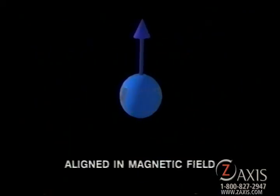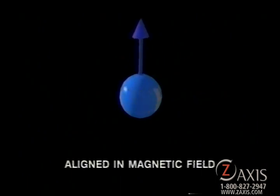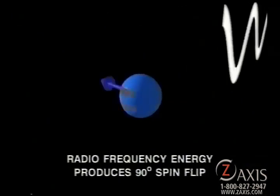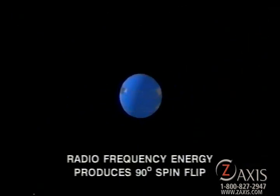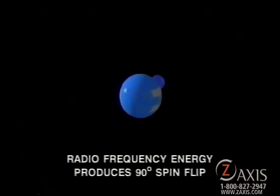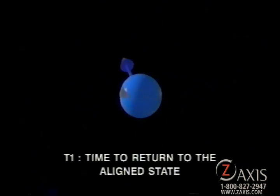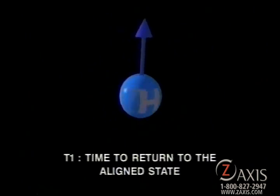Exposing these aligned and spinning protons to a pulse of radiofrequency, or RF energy, causes them to spin 90 degrees away from the original axis in a process called spin-flipping. The T1 time is simply the time that it takes for the proton to return to alignment with the external magnetic field. It turns out that the T1 time is dependent on the type and condition of the tissue that contains the protons.